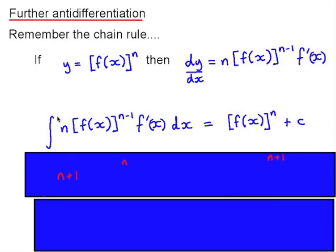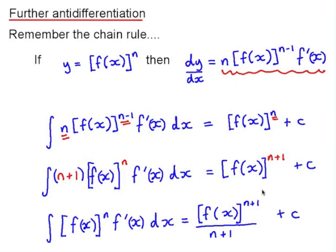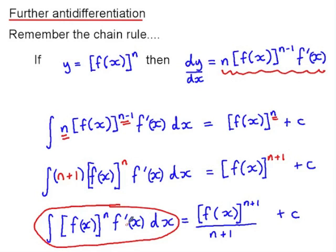What that means is the anti-derivative, or the integral of this, is f(x) to the power of n plus that constant of integration. Now if we adjust this slightly — replacing n-1 with n+1 and n — and then divide both sides by n+1, we get a method for integrating a function of x raised to the power of n multiplied by the derivative of that function. It's f(x) to the power of n+1, divided by n+1, plus c.